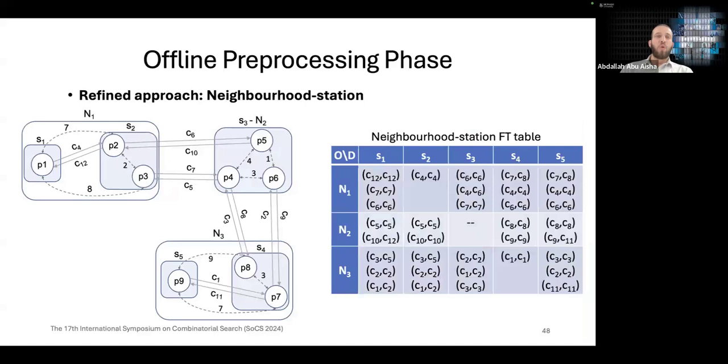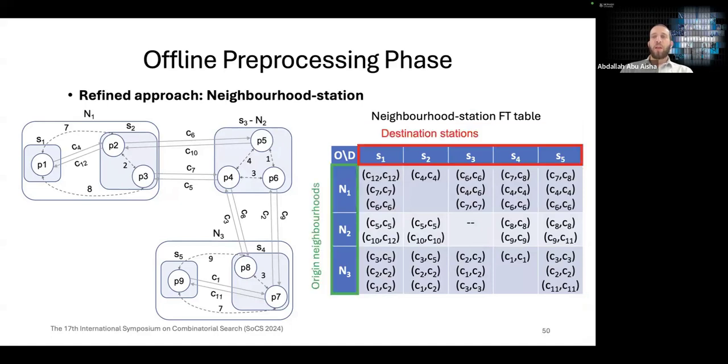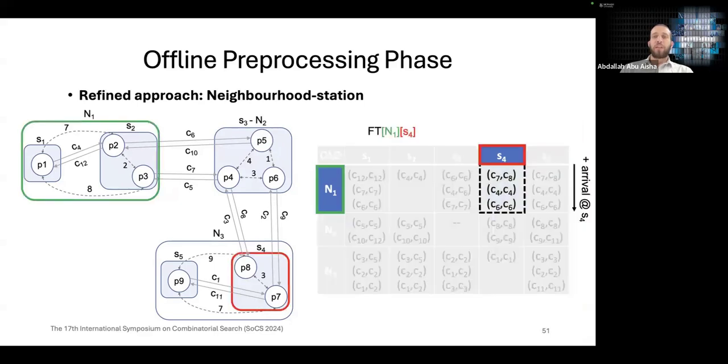To solve this issue, we propose our refined approach, which is neighborhood to station FT table. In this case, the rows represent the origin neighborhoods, the columns represent the destination stations. A specific OD cell, for example, FTN1S4, contains the first moves on the optimal journeys from N1 to S4. These transfer connections are sorted by the arrival time at the destination station, in this case, S4.